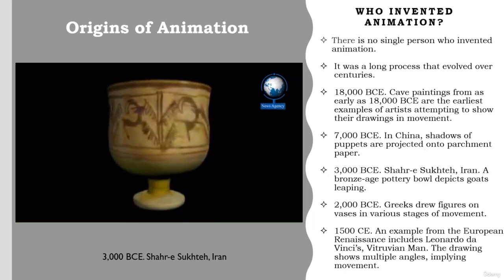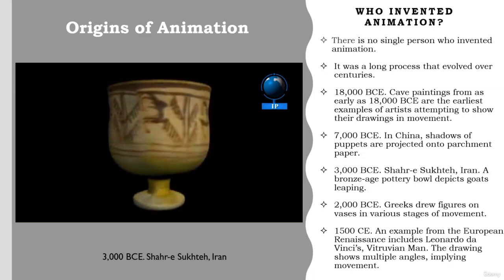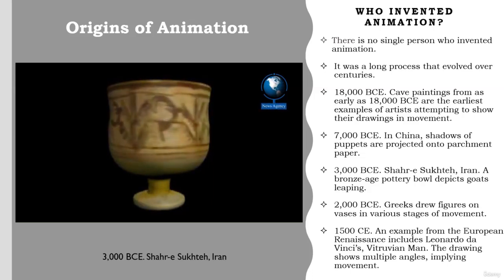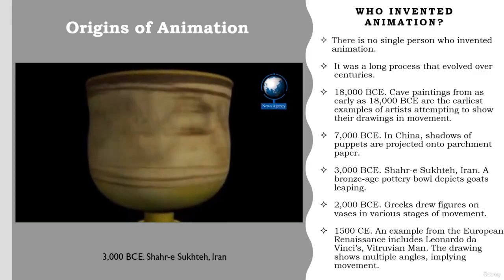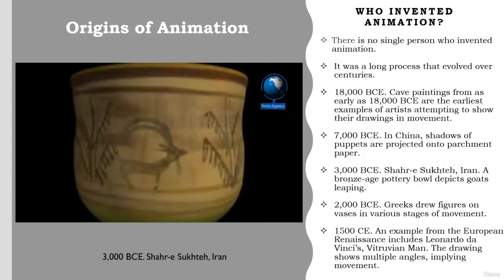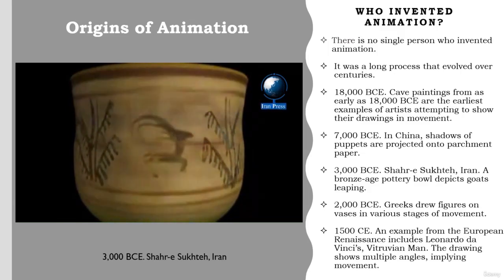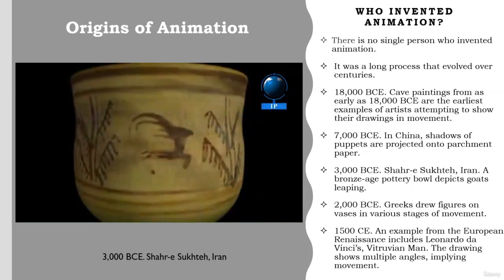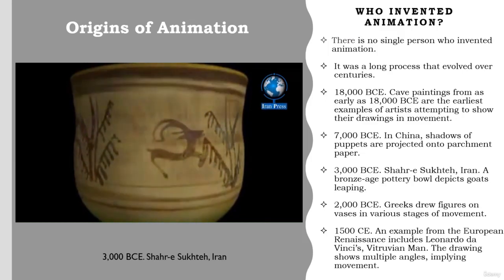It's difficult to pinpoint a single person as the inventor of animation. Instead, it was a long process that evolved over centuries. In fact, animation really started with cavemen. Cave paintings from as early as 18,000 BCE are the earliest examples of artists attempting to show their drawings in movement. Historians believe that these images of animals with multiple sets of legs were made to look like they were moving by the shadows cast on them from fires. Archaeological findings prove that people have been attempting to depict things in motion for as long as they've been able to draw.